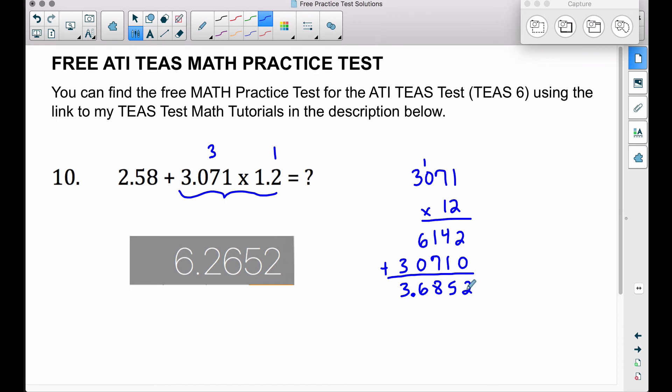Now we can add on this 2.58. What's important here is that you must line up the decimals when you add decimals. You may wonder what we put over here to the right - we can just throw in some zeros, and we can add these two numbers together. It should match this right here.